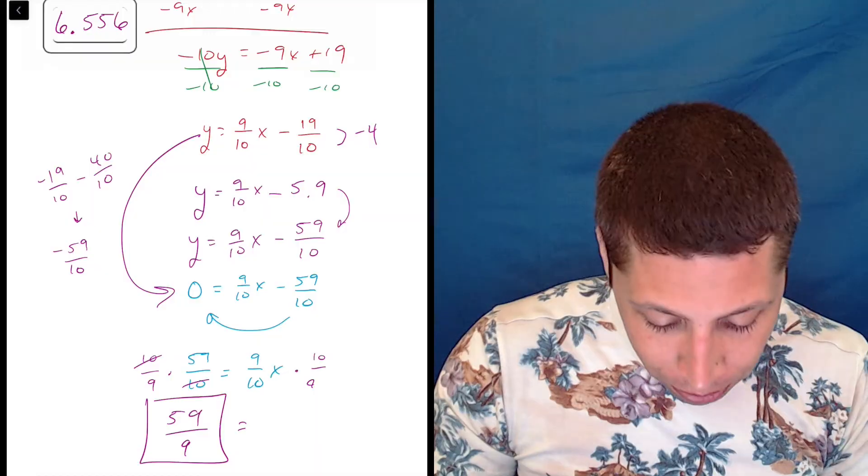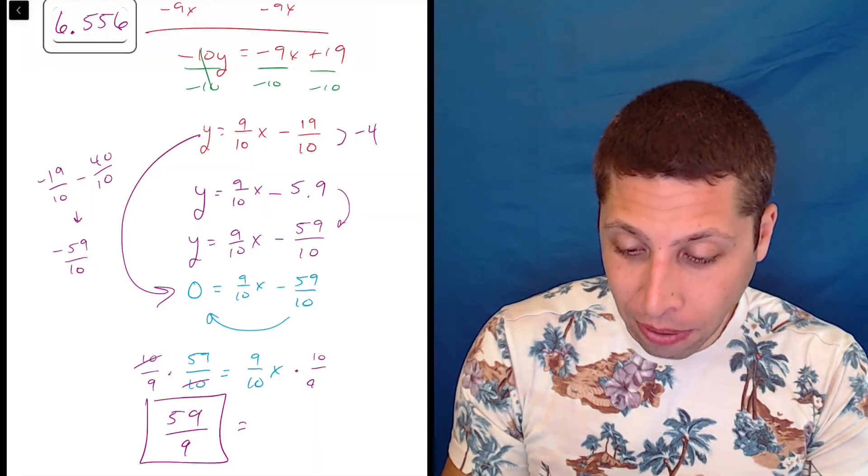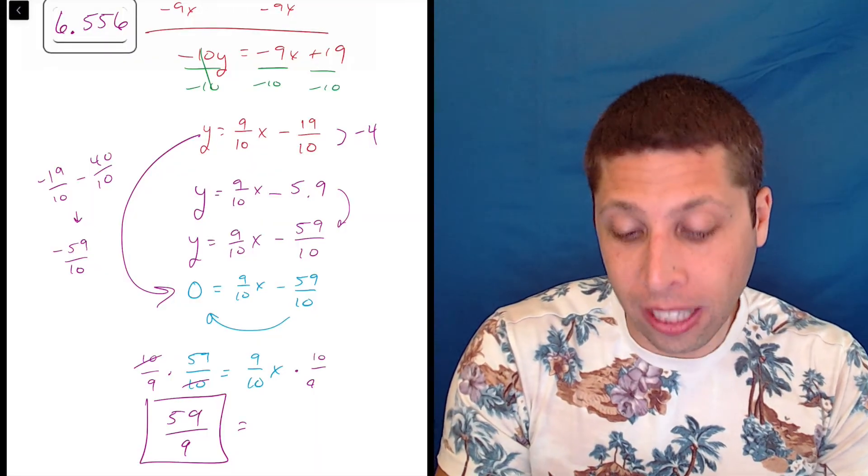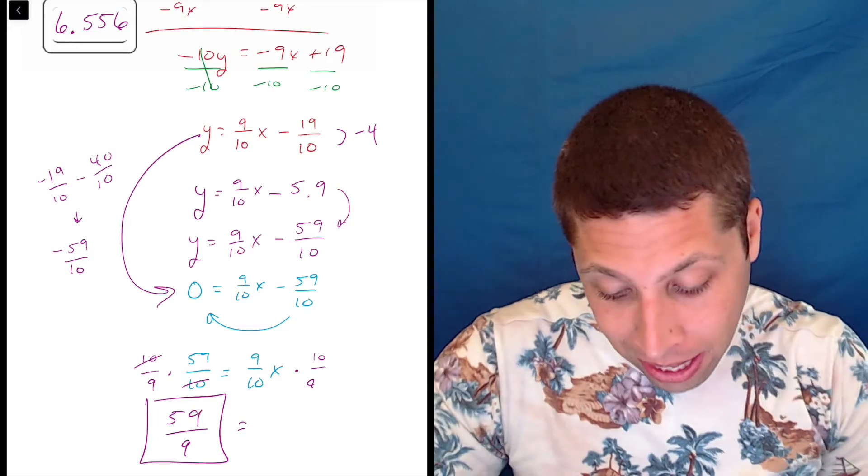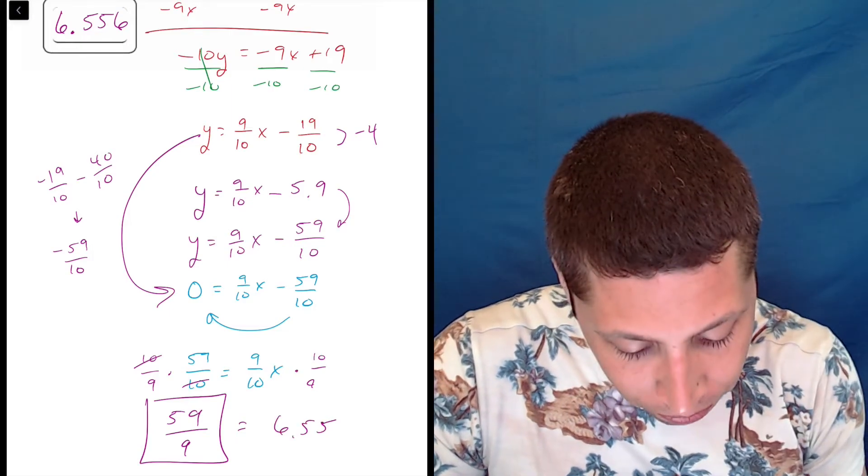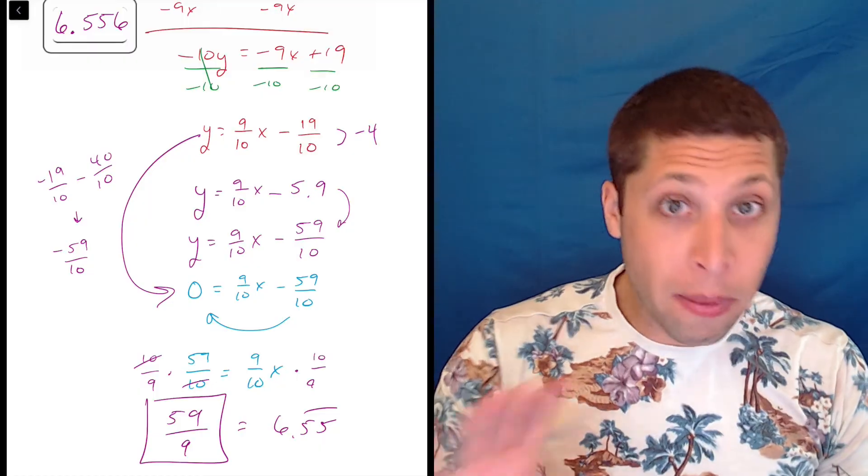If we were to put it in the calculator, we can check 59 divided by 9 is 6.5555 repeating. So 6.55 repeating. So it's the same number.